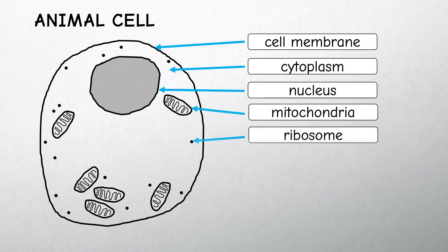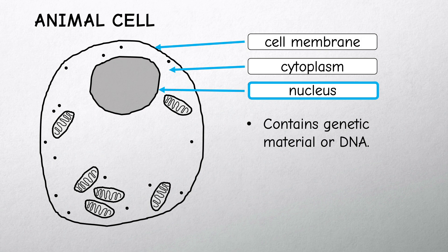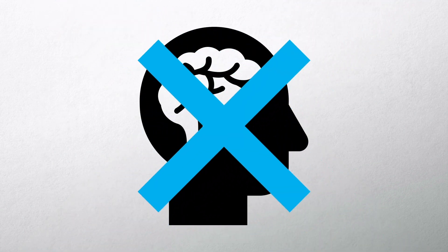Animal cells are eukaryotes so they contain a nucleus that is surrounded by a membrane. The nucleus contains genetic material or genes and these are made of DNA. The nucleus controls cell activities but it's not the brain of the cell.